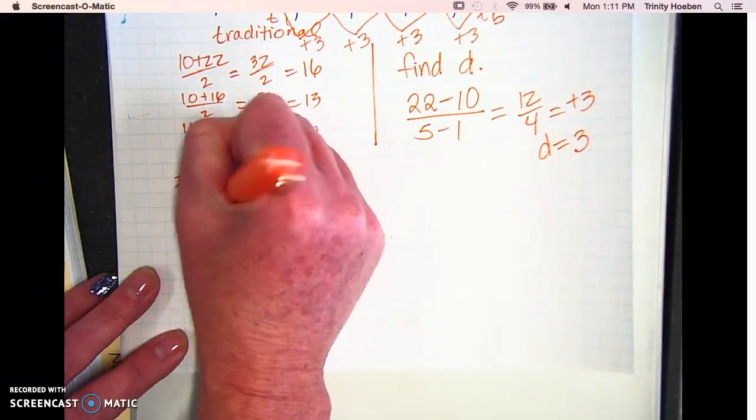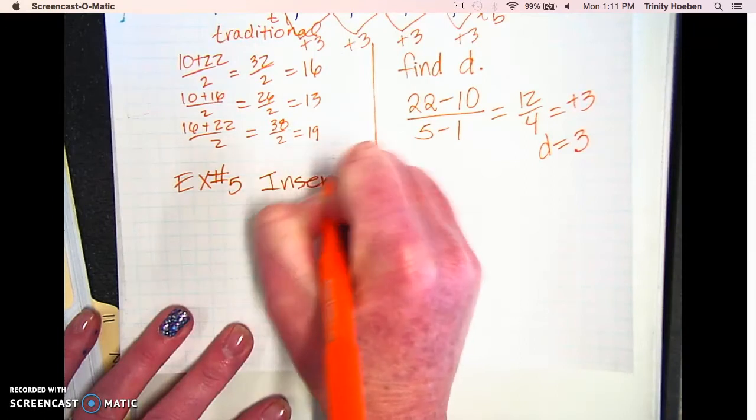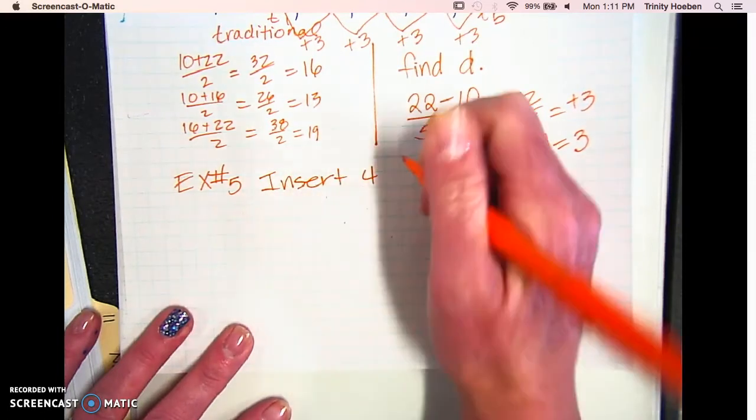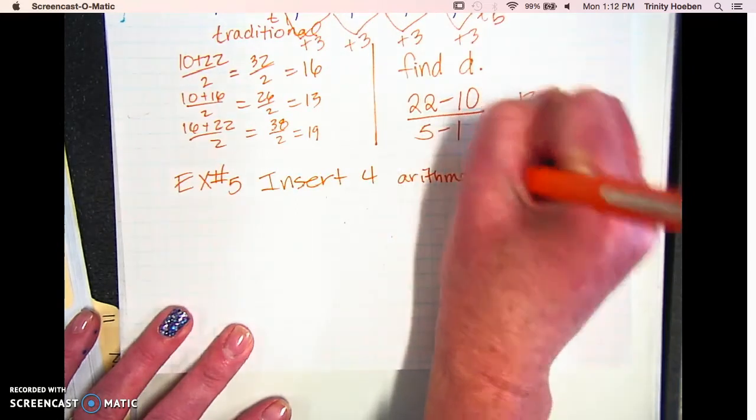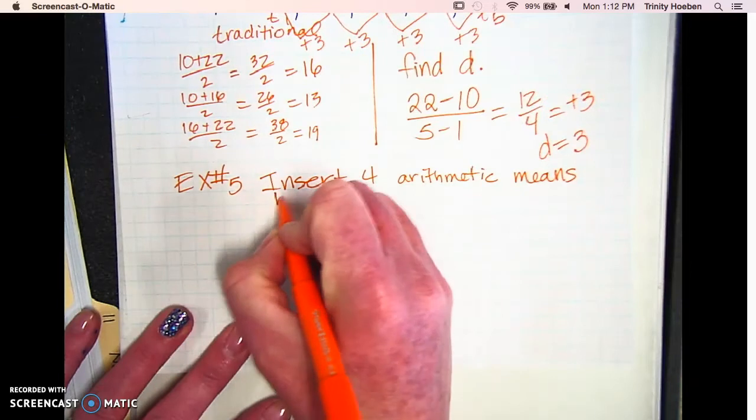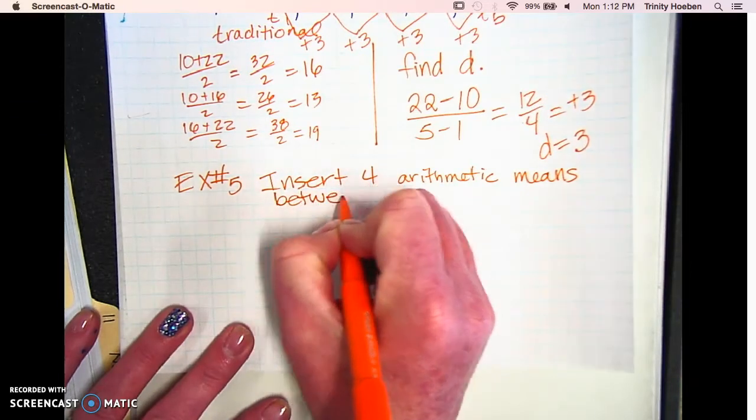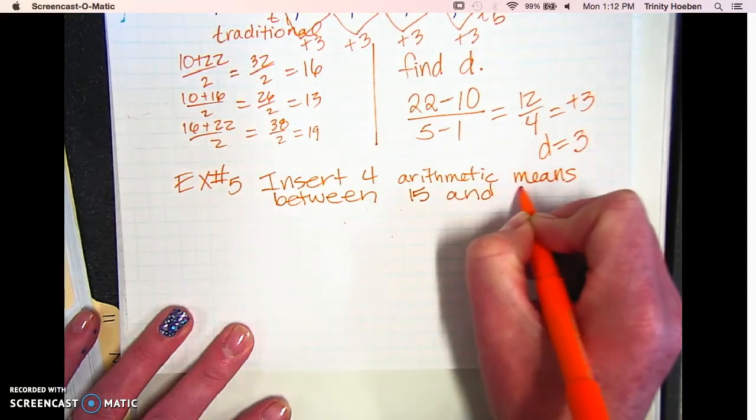We've got one more. So example number five, we're going to insert four arithmetic means between two numbers, between 15 and 50.